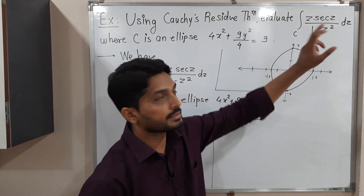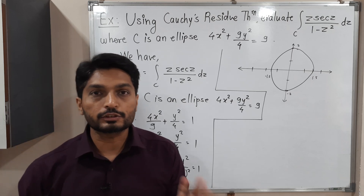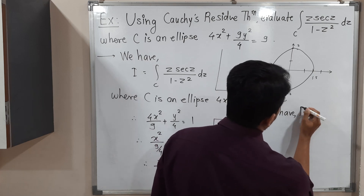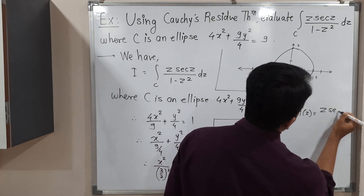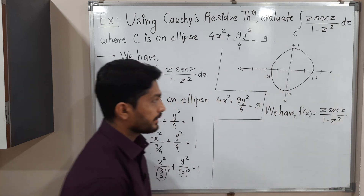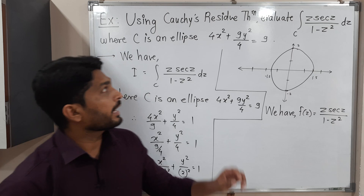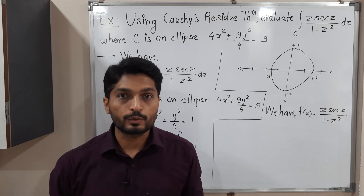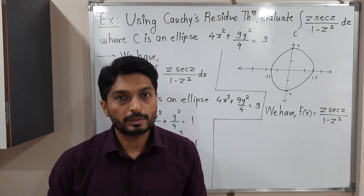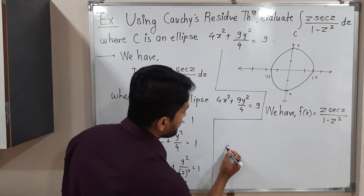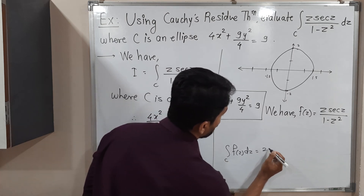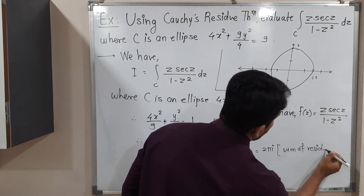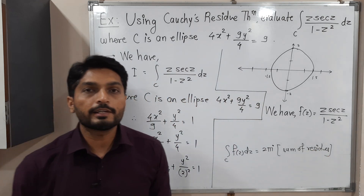The second important thing is the function inside the integration. We have f(z) = z·sec(z) / (1 − z²). We are told to solve this complex integration with the help of Cauchy's residue theorem. Cauchy's residue theorem states that the integration over c of f(z) dz equals 2πi times the sum of residues. That means with the help of residues, we find the value of the integration.